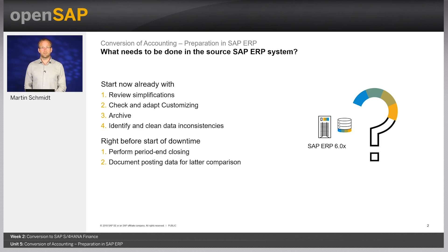Just before the start of downtime, as part of cut-over, you execute period and closing activities. We also recommend documenting your financial data for later comparison. To make this comparison possible, you carry out selected reports for the current year just before conversion — reports you normally use to document your financial closing, such as financial statements, open line item lists, and list of GL account balances. You can store the results in a local file, and after conversion, generate the same lists and compare the results.